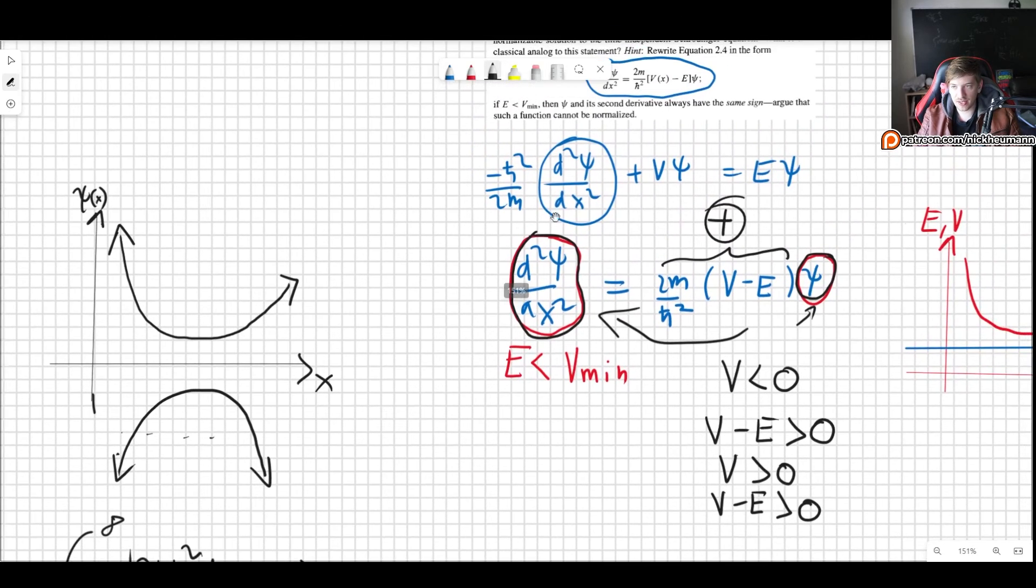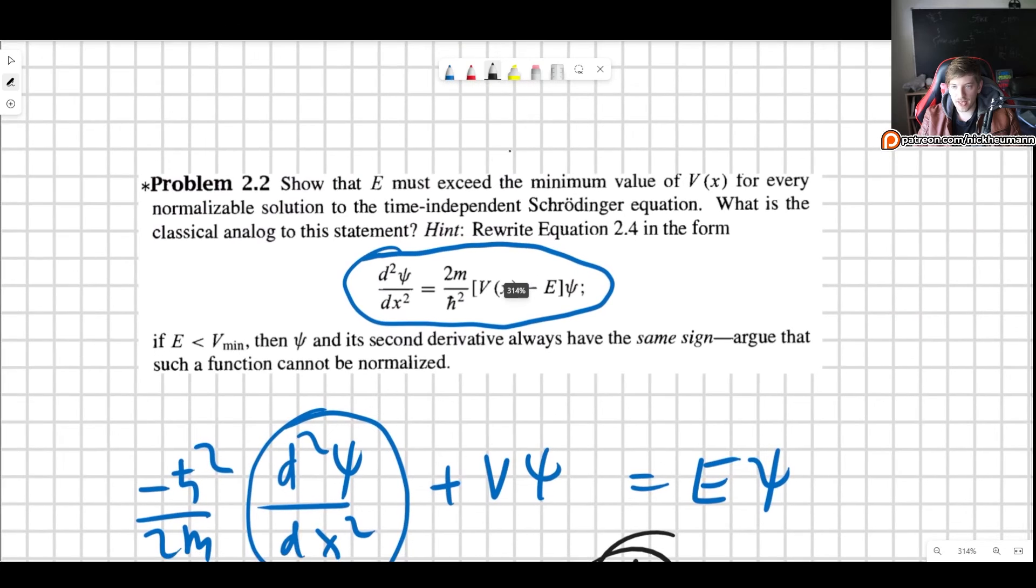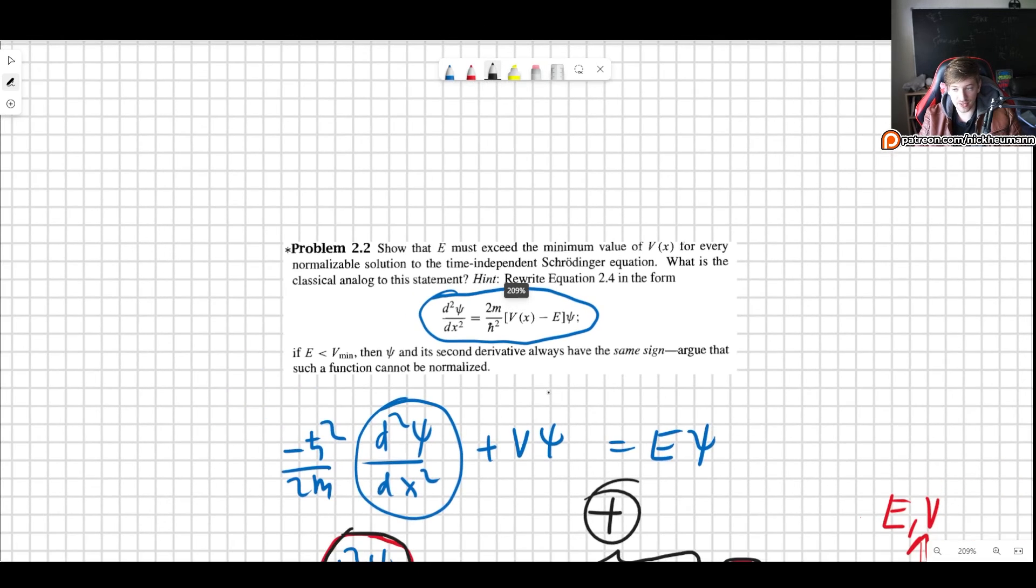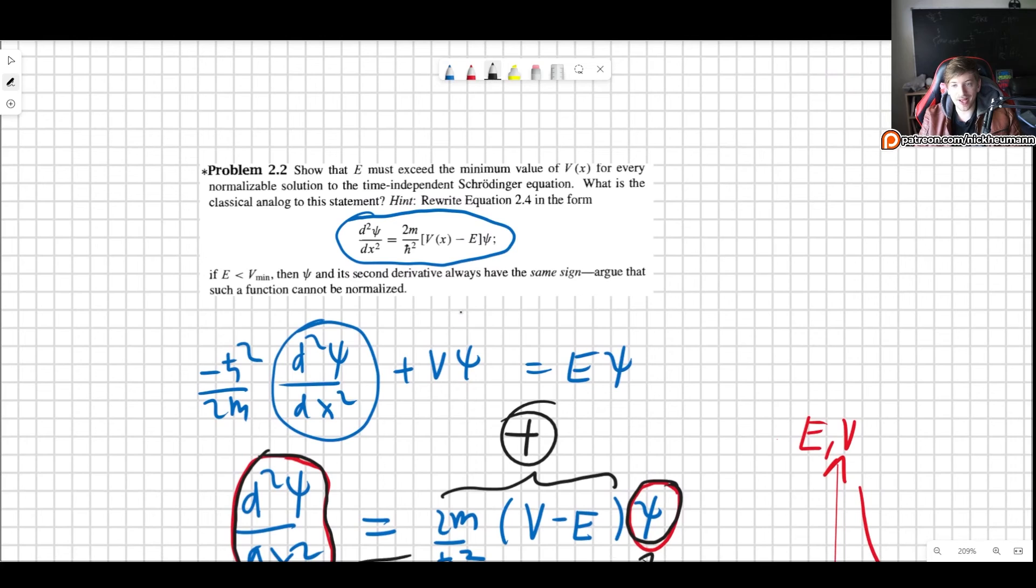And that is precisely why we get this condition. The energy must exceed the minimum value of the potential for every normalizable solution to the time-independent Schrödinger equation. There we go. This is the proof. This shows why that occurs.